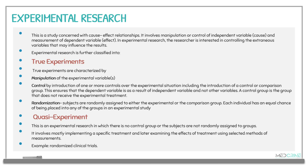The second classification of experimental research is the quasi-experiment. This is an experimental research in which there is no control group, or the subjects are not randomly assigned to groups. It usually involves implementing a specific treatment and later examining the effects using a selected method of measurement. An example is randomized clinical trials, such as the introduction of a new drug or discovery of a new medication for a given disease.